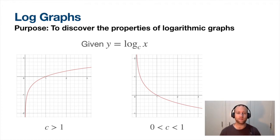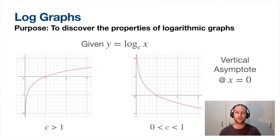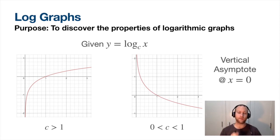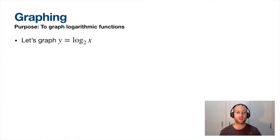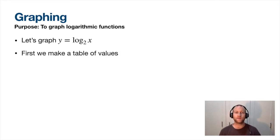Also notice here there's a vertical asymptote. Remember with exponentials we had horizontal asymptotes; now we have a vertical one. So let's start graphing - y equals log base 2 of x.